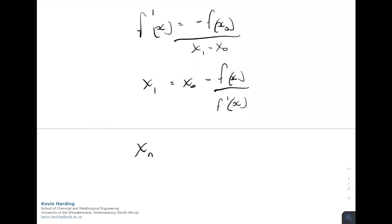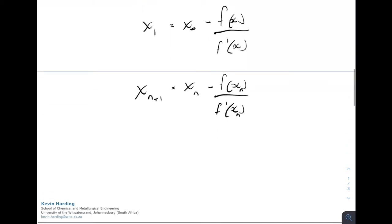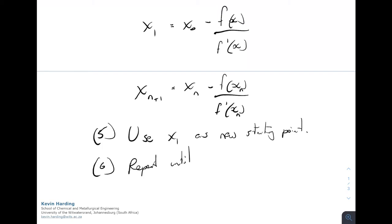More conveniently, we can write that the xn plus 1 value is equal to the previous xn guess minus the f of xn divided by the f prime xn. The next step, step 5, is going to be repeating this. So we're going to use x1 or xn plus 1 as the new starting point. And then we will repeat until the xn value is equal to the xn plus 1 value. Or what this will also mean is we repeat until the f of x is equal to zero.